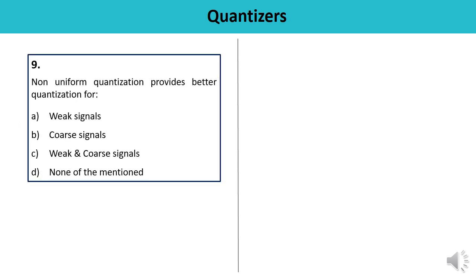Question 9: Non-uniform quantization provides better quantization for — weak signal, coarse signal, both, or none? According to signal-to-noise ratio, non-uniform quantization provides better quantization for weak signals, because the step size can be varied according to the input signal value, providing flexibility. The answer is A — confirmed correct.